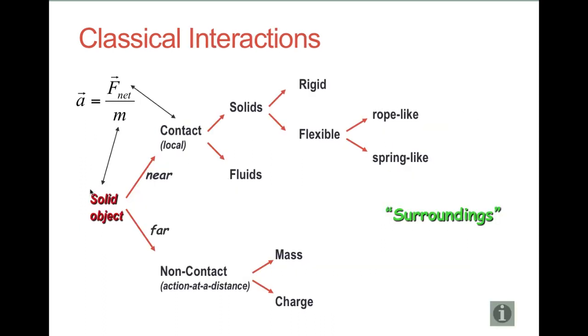Now, consider a solid object right here, whose mass is m. We want to identify all the different interactions with its surroundings so we can calculate this net force. Well, as I just mentioned, we can have things that are in immediate contact and things that are not. Well, things that it can be in contact with could be another solid, or it could be a fluid, a liquid, or a gas. Those solids could be rigid, other solid objects, or they could be things like ropes or springs that are flexible.